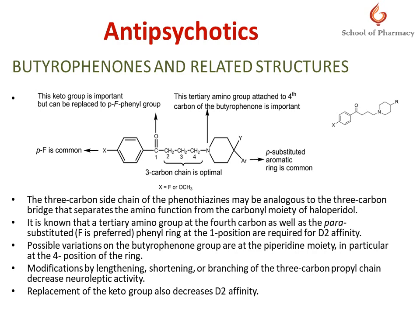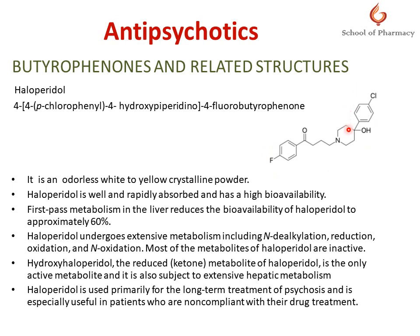Now let us look at haloperidol. This is the structure of haloperidol — one aromatic ring is also required for antipsychotic activity. Haloperidol has an IUPAC name and is a colorless white-to-yellow crystalline powder. It is well and rapidly absorbed with very high bioavailability; however, due to first-pass metabolism in the liver, the bioavailability of haloperidol is approximately 60%. It undergoes extensive metabolism including N-dealkylation, reduction, and oxidation, but most of the metabolites of haloperidol are inactive.